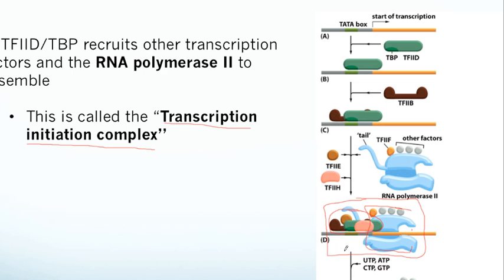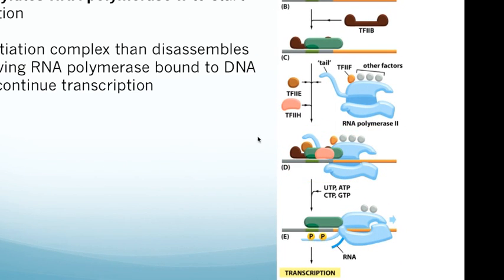Once everything is bound and ready, transcription needs to be stimulated. One of the general transcription factors, TF2H, will actually phosphorylate RNA polymerase 2 by adding a phosphate molecule to it. This sends RNA polymerase 2 on its way and actually initiates and starts transcription. The second that TF2H phosphorylates RNA polymerase, RNA polymerase can go and start making messenger RNA. Once RNA polymerase leaves, the other general transcription factors disassemble and leave RNA polymerase to finish transcription on its own.